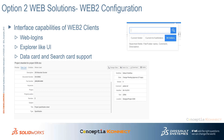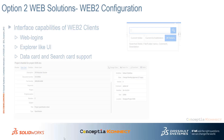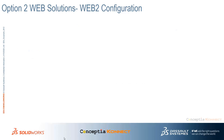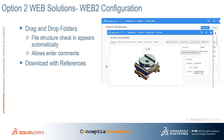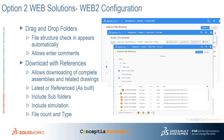SolidWorks PDM Web 2 allows users to check out and download complete assembly data to their local machine, where they can work to modify the downloaded files. Once the work is complete, the same set of files can be uploaded back. PDM Web 2 automatically takes care of references, updates the file structure when checking files back into the server, and allows users to enter comments describing the modifications made. Users can also check out and download reference data such as drawings, latest reference data, subfolders and their contents, and simulation results.